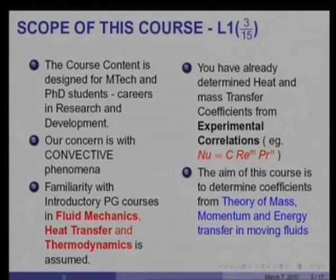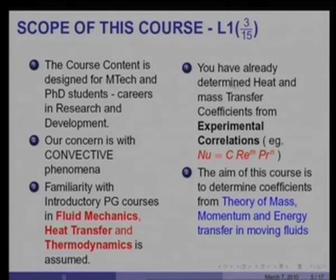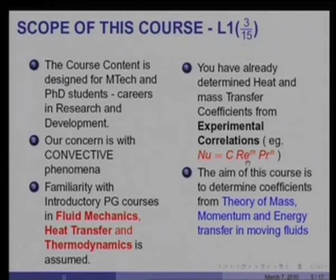Very briefly, the scope of this course is as follows. The course content is designed for masters and PhD students who wish to pursue careers in research and development. Our concern is with convective phenomena. The neighbors of convective heat transfer are fluid mechanics, thermodynamics, and undergraduate heat transfer, and I shall assume you have familiarity with these three. For example, you have already determined heat and mass transfer coefficients from experimental correlations such as Nusselt number equals a constant multiplied by Reynolds number to the power m, multiplied by Prandtl number to the power n, where C, m, and n are specific to the particular situation.